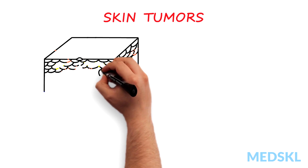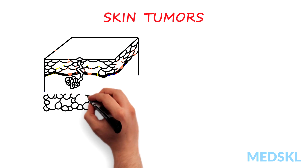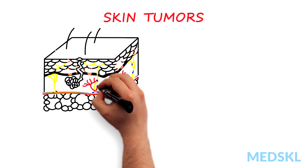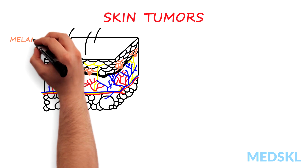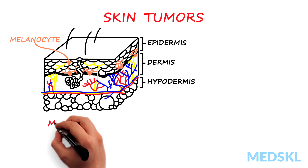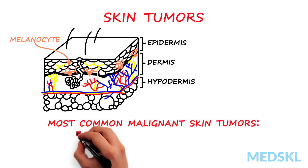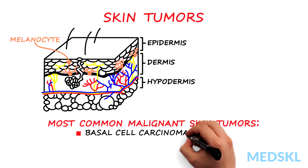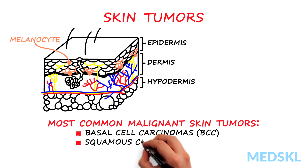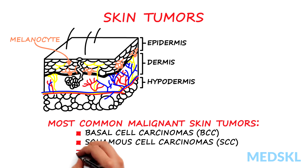Tumors of the skin and subcutis can be benign or malignant. The most common malignant skin tumors are basal cell carcinomas, squamous cell carcinomas, and melanoma.